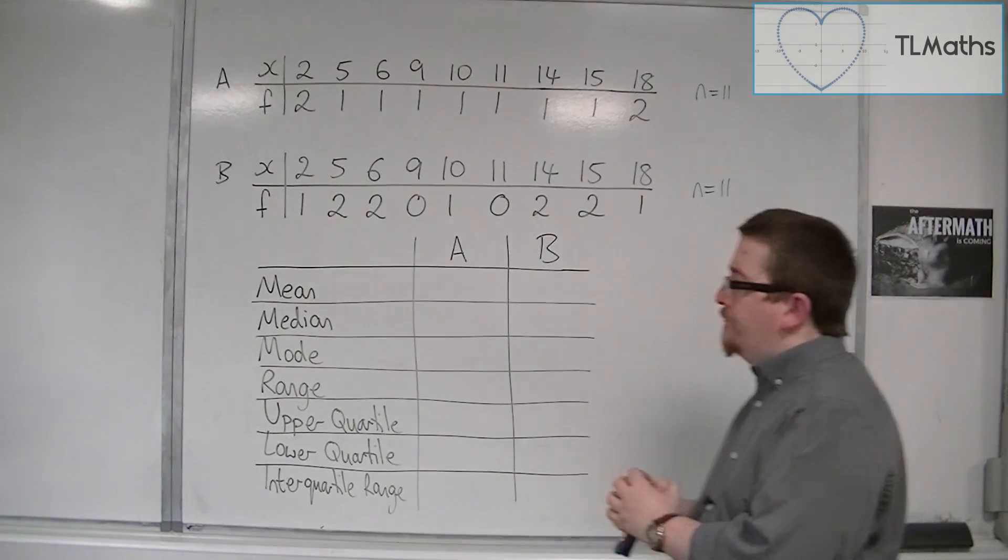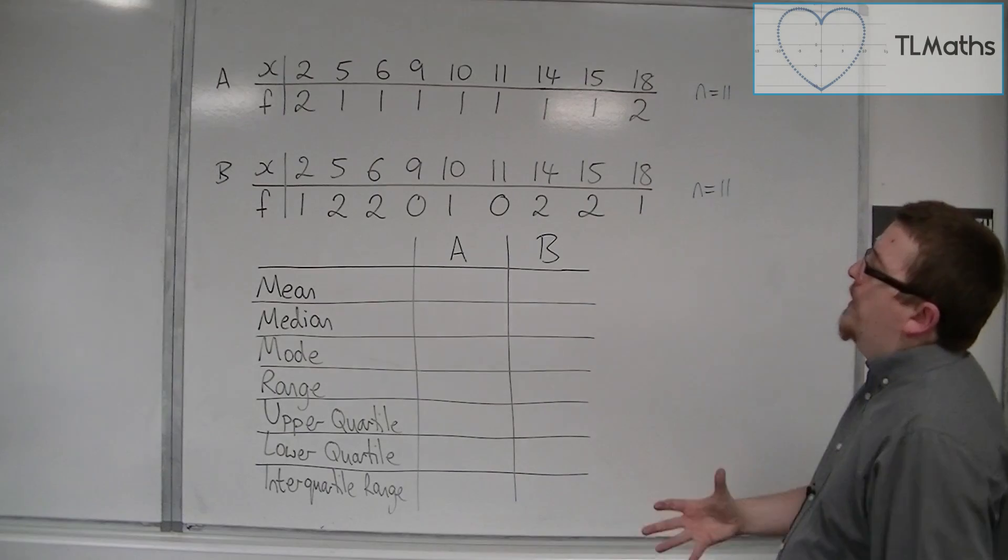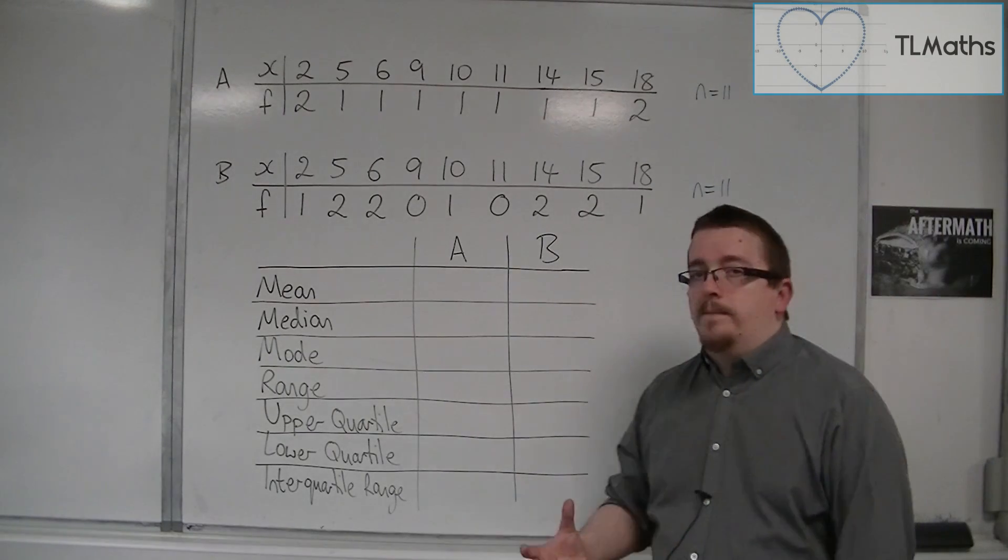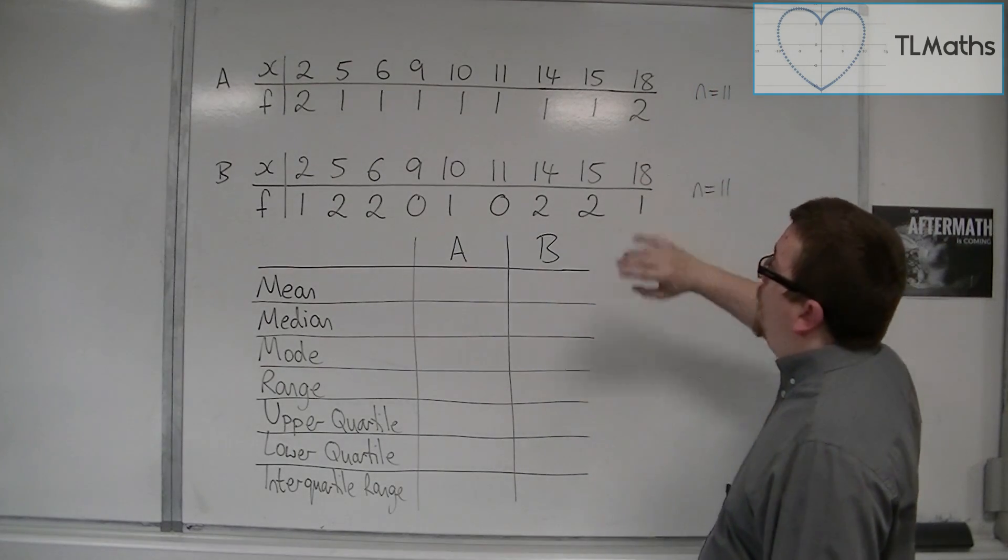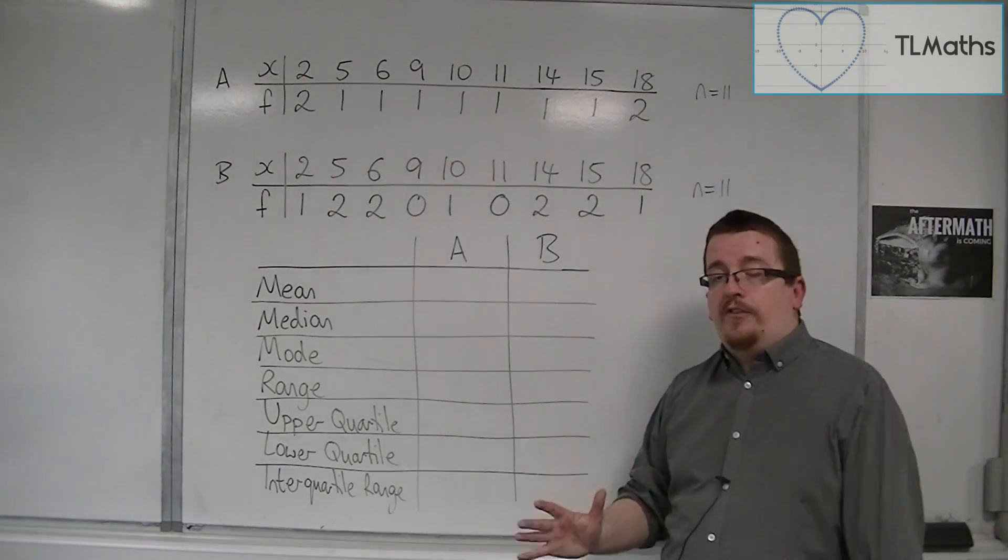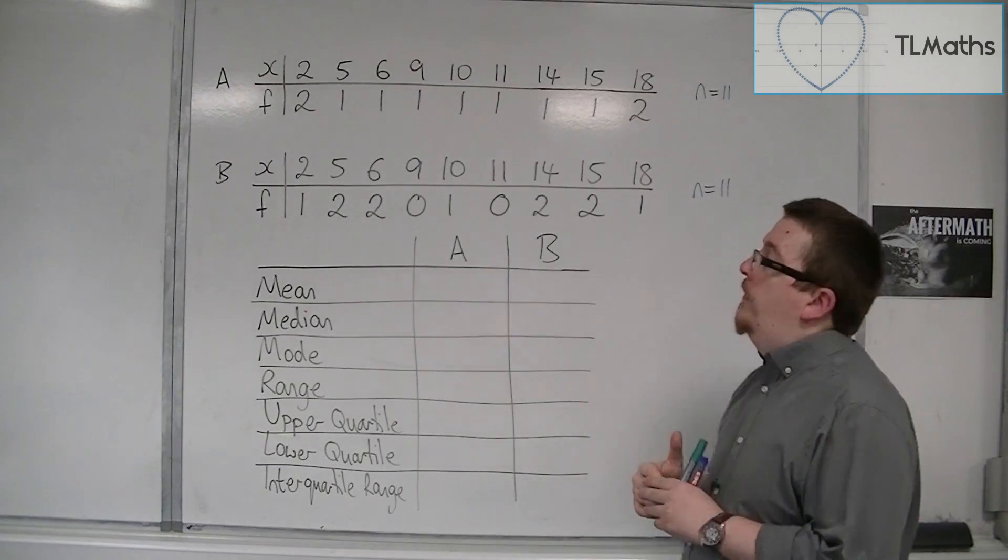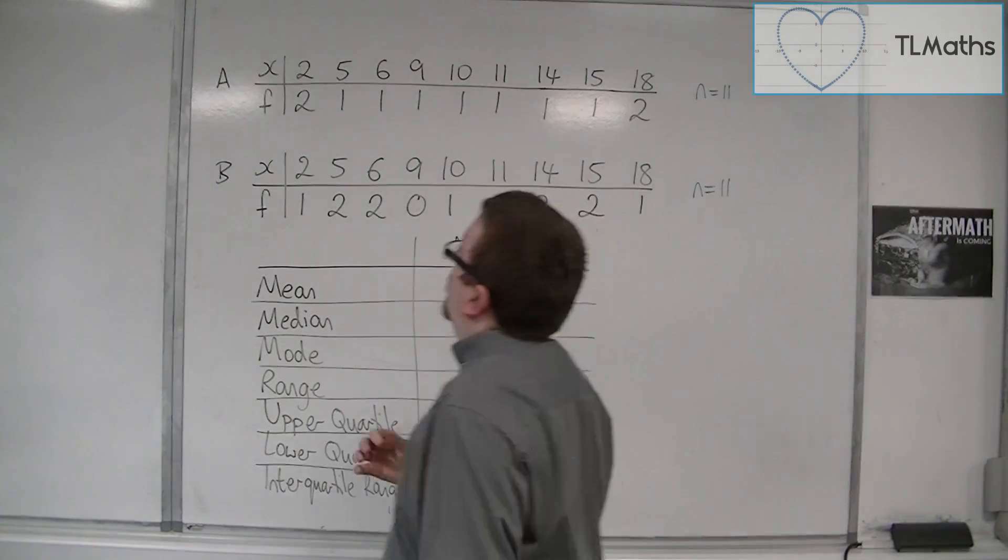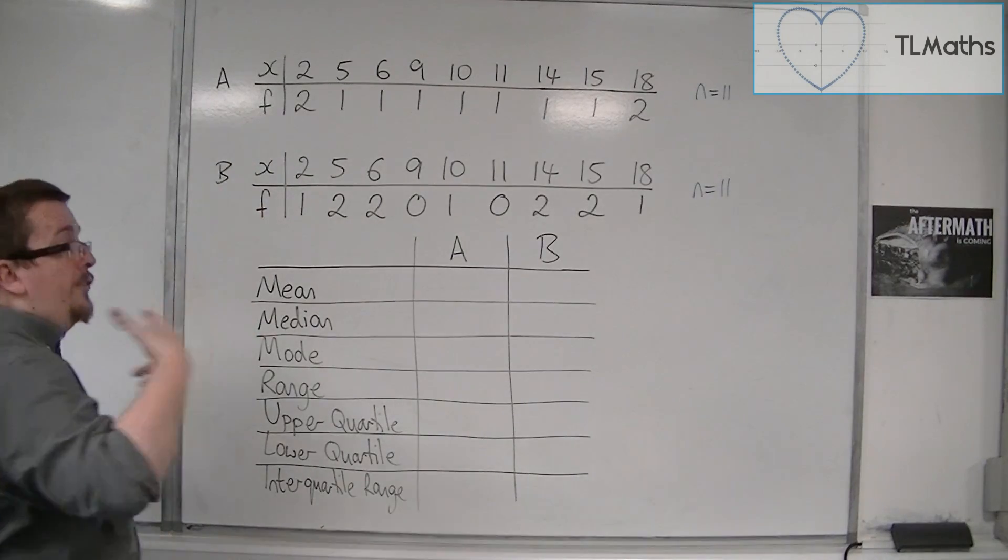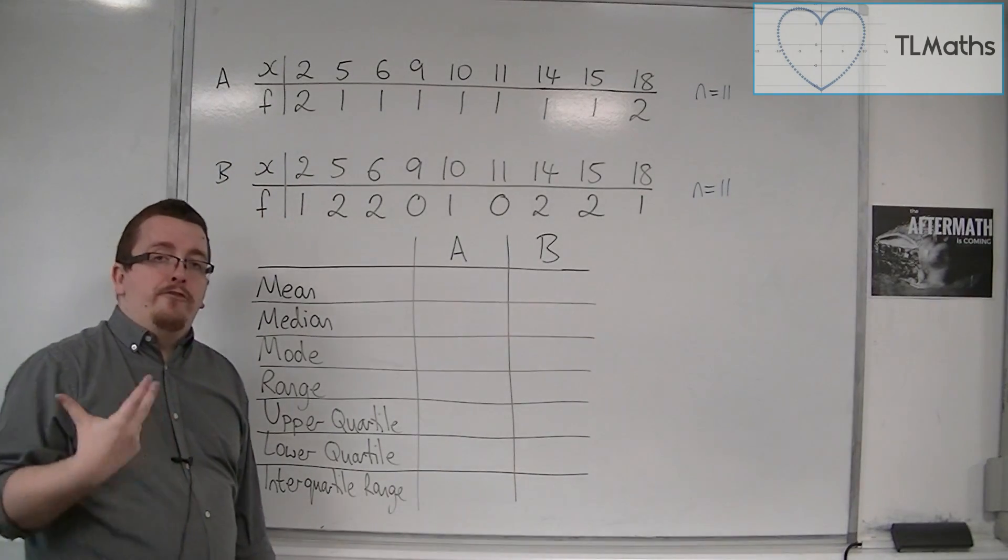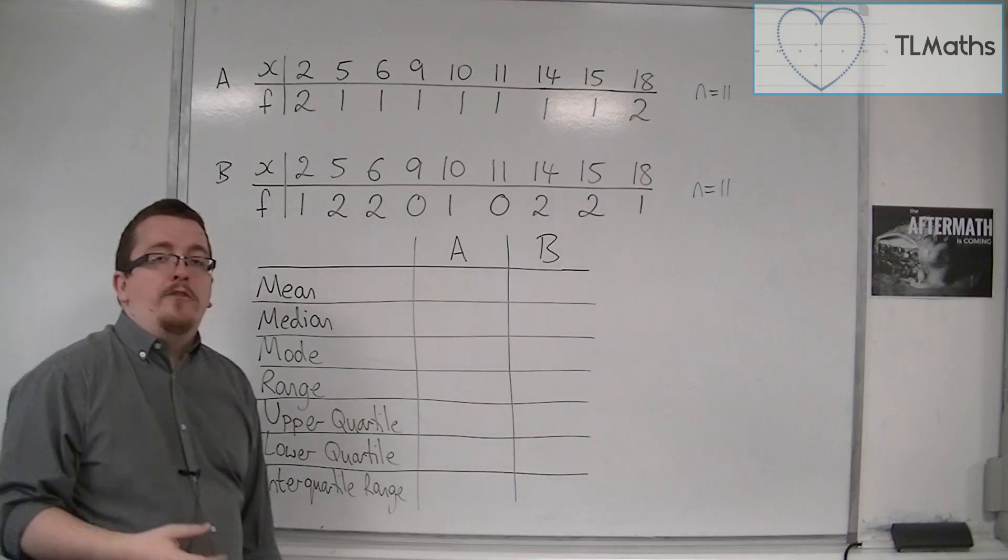So what I've got here are two sets of data and I've tabulated them. So I've got one set of data here for A and one for B. They both have exactly the same number of data or entries. The F represents frequency, and remember, frequency is a maths word for how many.